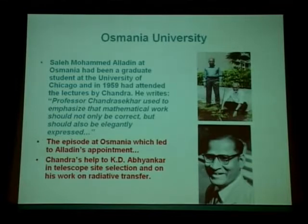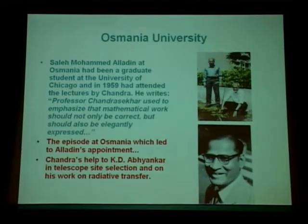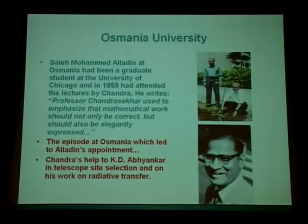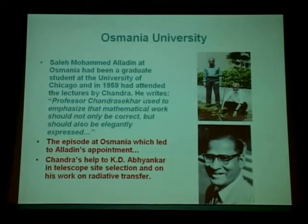This was a very good thing for the university because Osmania certainly gained by the school of astronomy that Aladin set up — he had a number of students and his work on galaxy interactions was very well received. I again think that if today a vice-chancellor took such a bold step, somebody would have gone to court and the whole thing would have been put in limbo. Those days were better in the sense that if you wanted to appoint a meritorious person, the vice-chancellor had the power to do it. The other distinguished astronomer at Osmania University was K.D. Abhyankar, whose work on radiative transfer was very much influenced by Chandra's help.